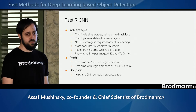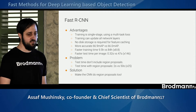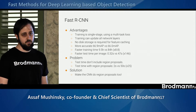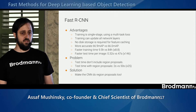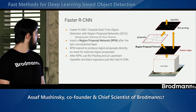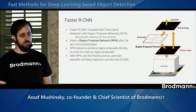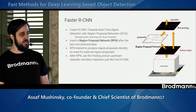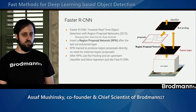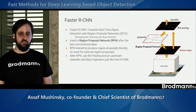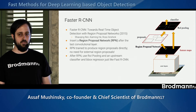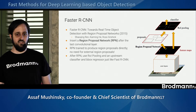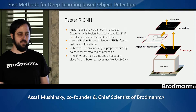How can we solve the proposal bottleneck and make this even faster? We can have the CNN perform the proposal extraction as well. This is called Faster RCNN. It uses an RPN — Region Proposal Network — to run over the feature space already computed for that image and generate the list of proposals used in the second stage.